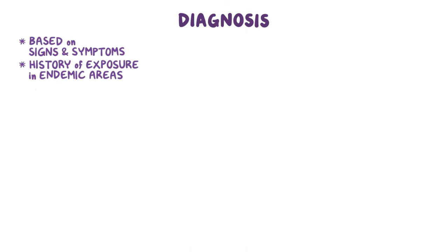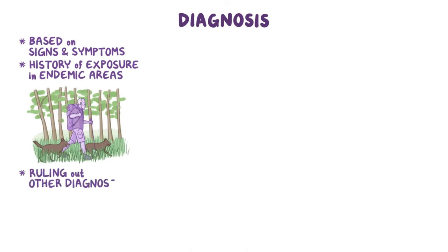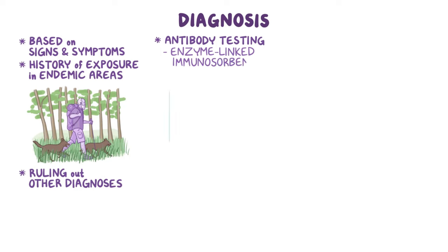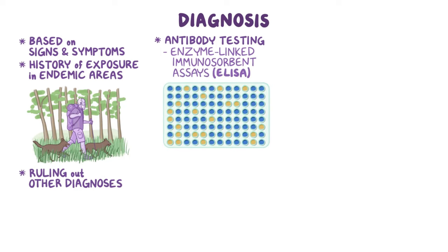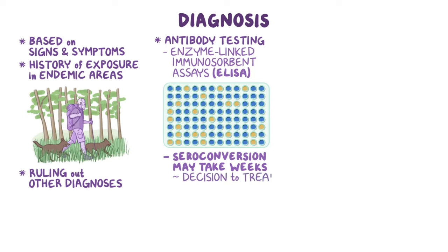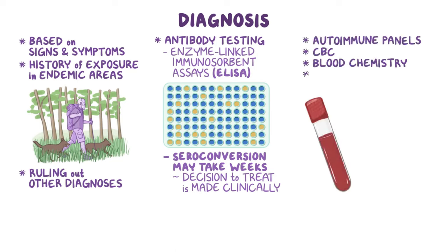Diagnosis is primarily based on clinical signs and symptoms, history of exposure in endemic areas, and ruling out other diagnoses. Antibody testing can be done, and the standard is to use enzyme-linked immunosorbent assays, called ELISA. Seroconversion may take several weeks, so the decision to treat is usually made clinically. Additional tests to assess tissue dysfunction can be helpful, like autoimmune panels, CBC, blood chemistry, and radiographs.